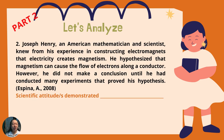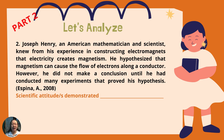Number two: Joseph Henry, an American mathematician and scientist, knew from his experience in constructing electromagnets that electricity creates magnetism. He hypothesized that magnetism can cause the flow of electrons along a conductor. However, he did not make a conclusion until he had conducted many experiments that proved his hypothesis. What scientific attitude is demonstrated by Henry?